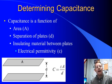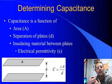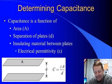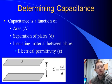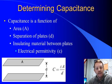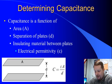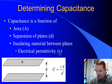Determining capacitance. Capacitance is a function of the area of the plates, the separation of the plates, and the insulating material between the plates, also known as a dielectric. And we talk about or characterize that dielectric in terms of its electrical permittivity, which is given the Greek letter epsilon.